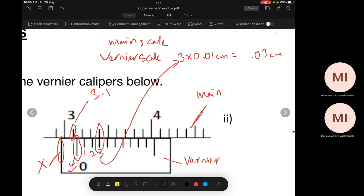I think I better write it here. This one is 3.1, right? Main scale is 3.1. Is it true? What you need to do is you need to add the number. So you get 3.13 centimeter.